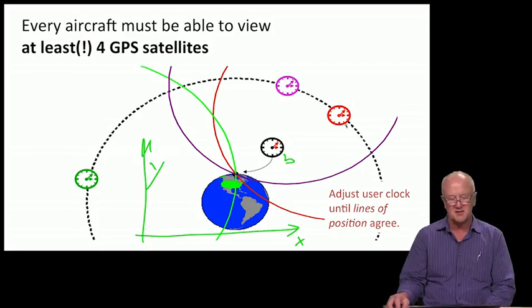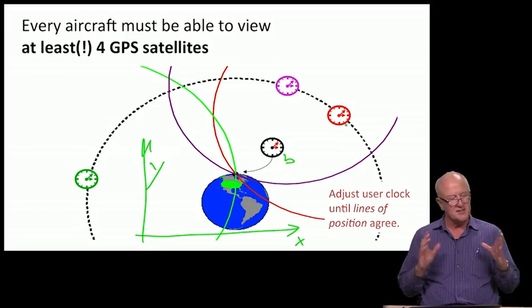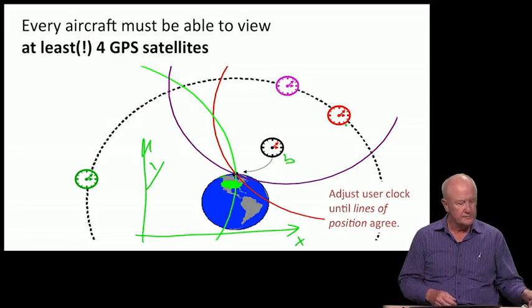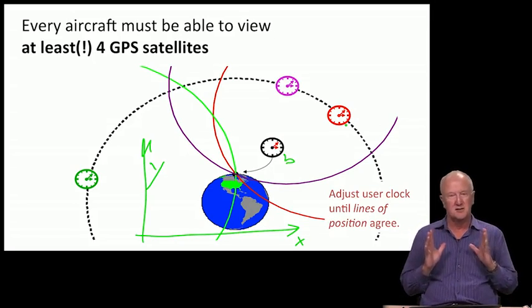The GPS receiver can be thought of as that box which adjusts its time offset, b_u, until the three lines of position intersect at a point.